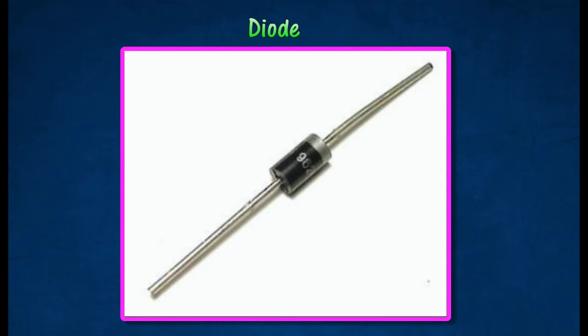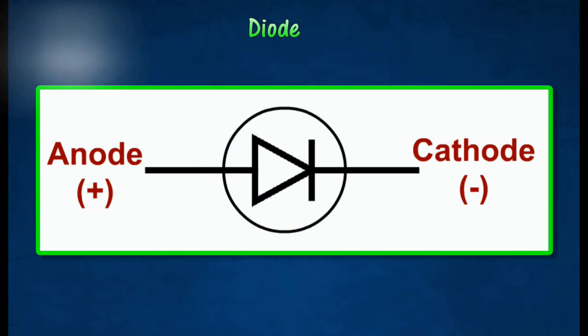If the diode is reversed, the flow of current is stopped. The arrow in the symbol of a diode represents the direction of current flow through the diode.